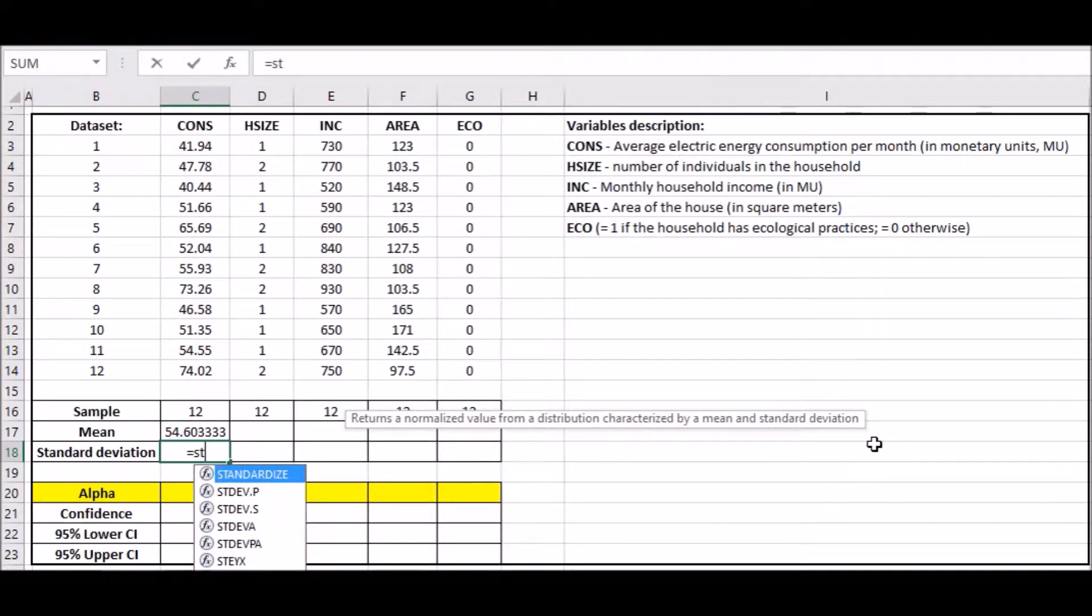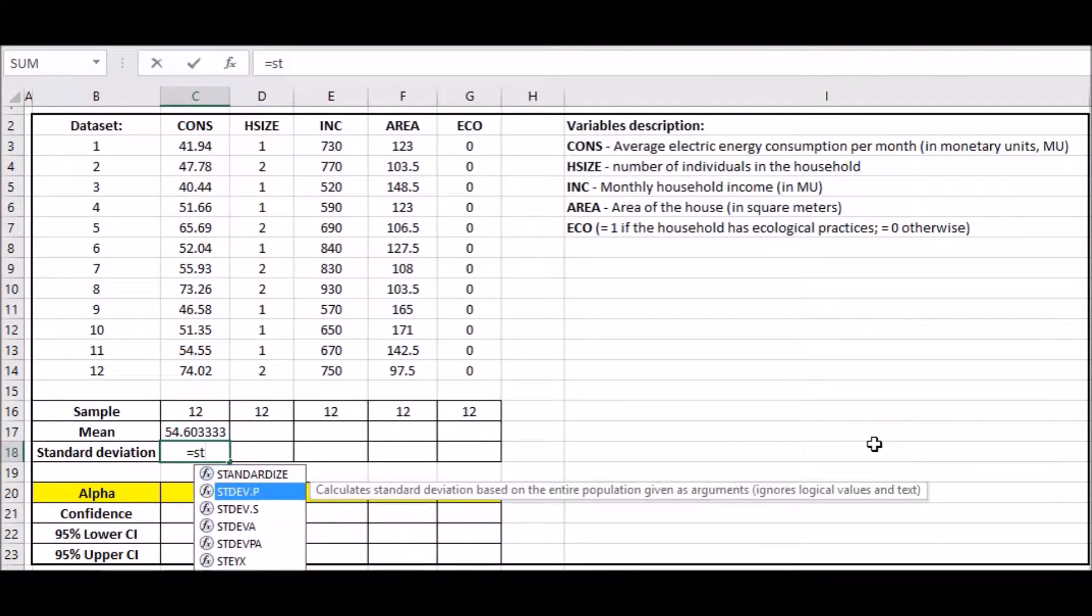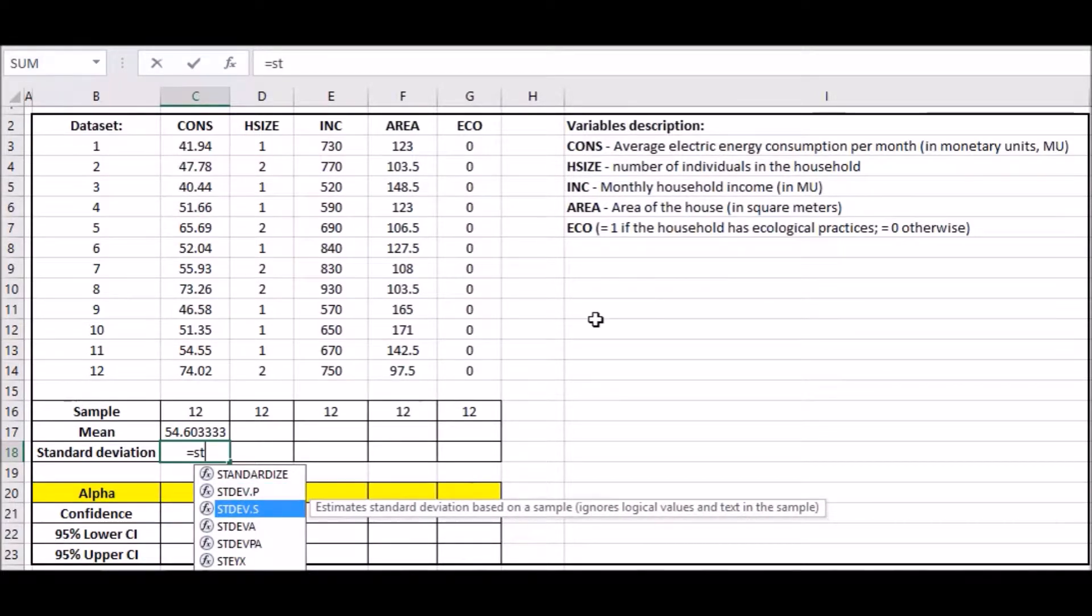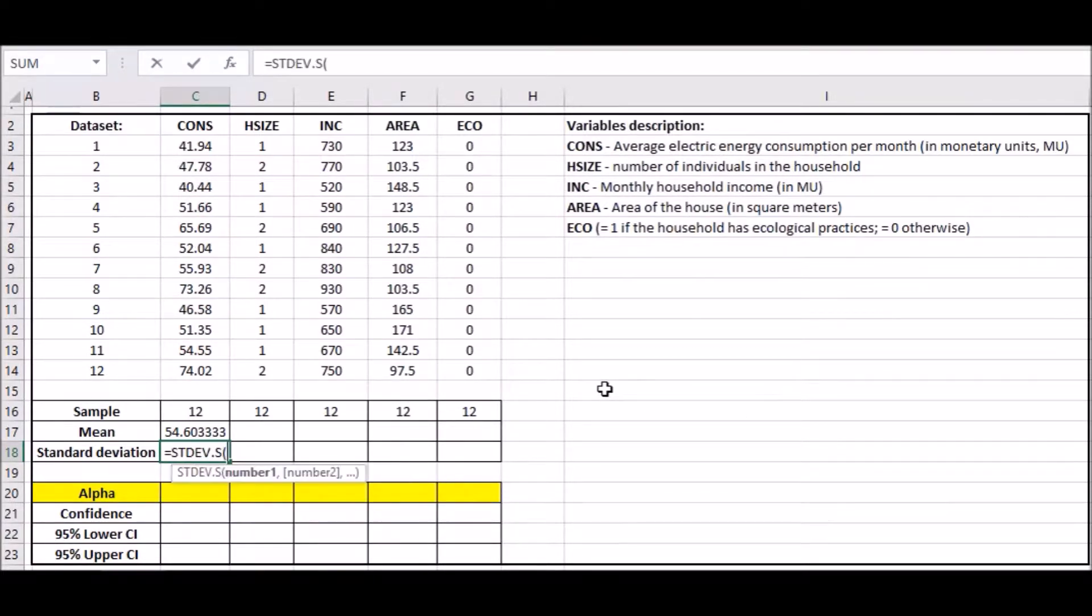Lastly, do the standard deviation. If you're using Excel 2016, you'll notice you have .P and .S. This calculates standard deviation based on entire population. This is clearly just a sample size, so click on .S.